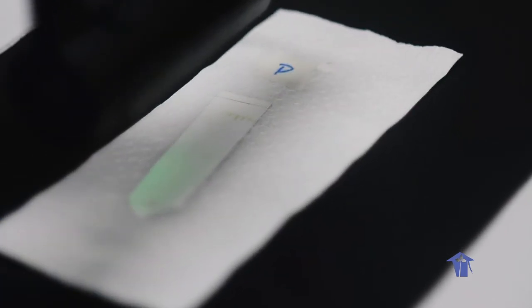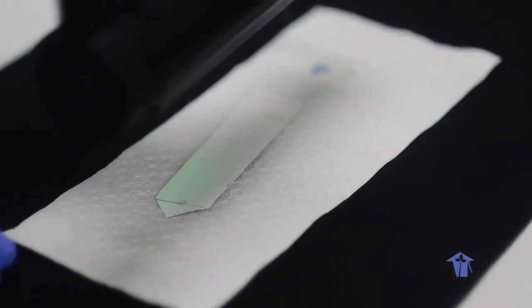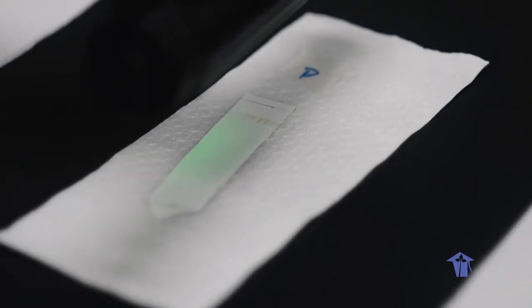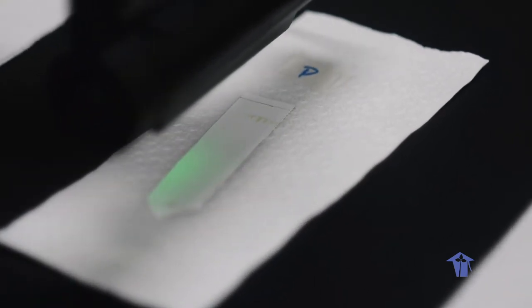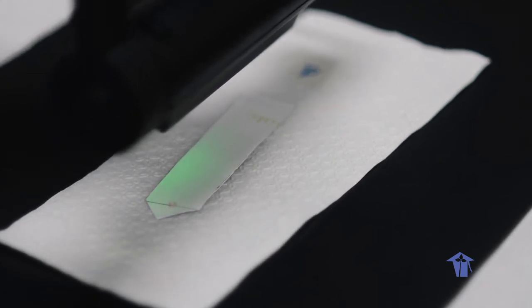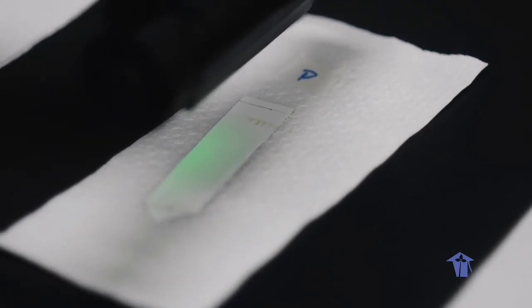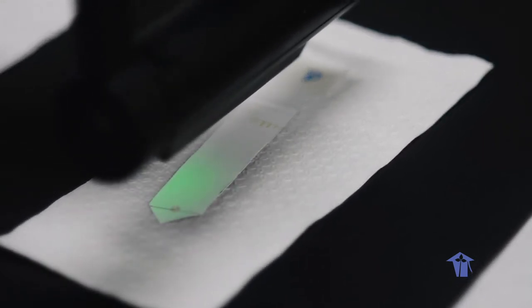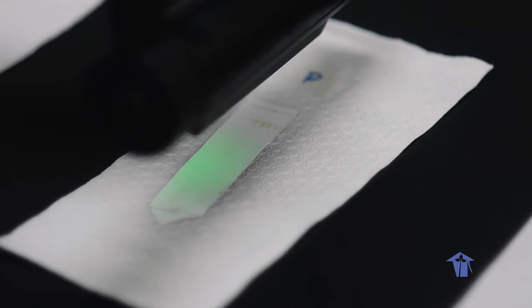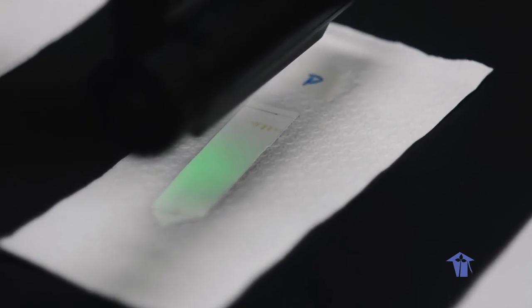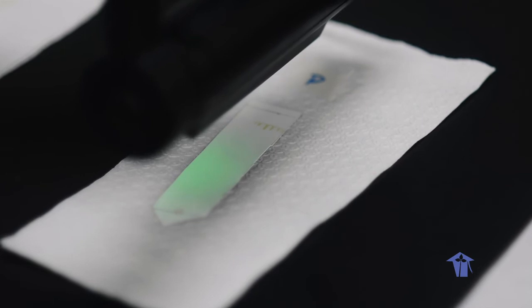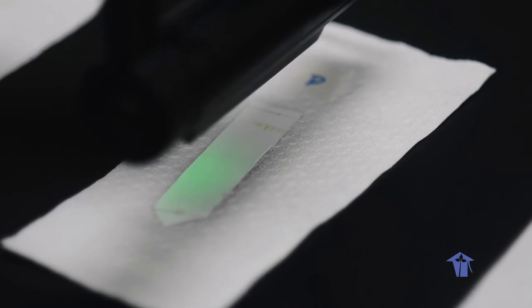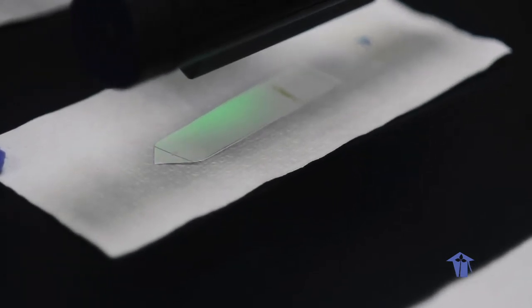We are going to move on next to the one that was taken from the pak choy. I'm just moving the UV lamp slightly up and down to give you some views of what has happened to it. Next one is the sample that was taken from kale.